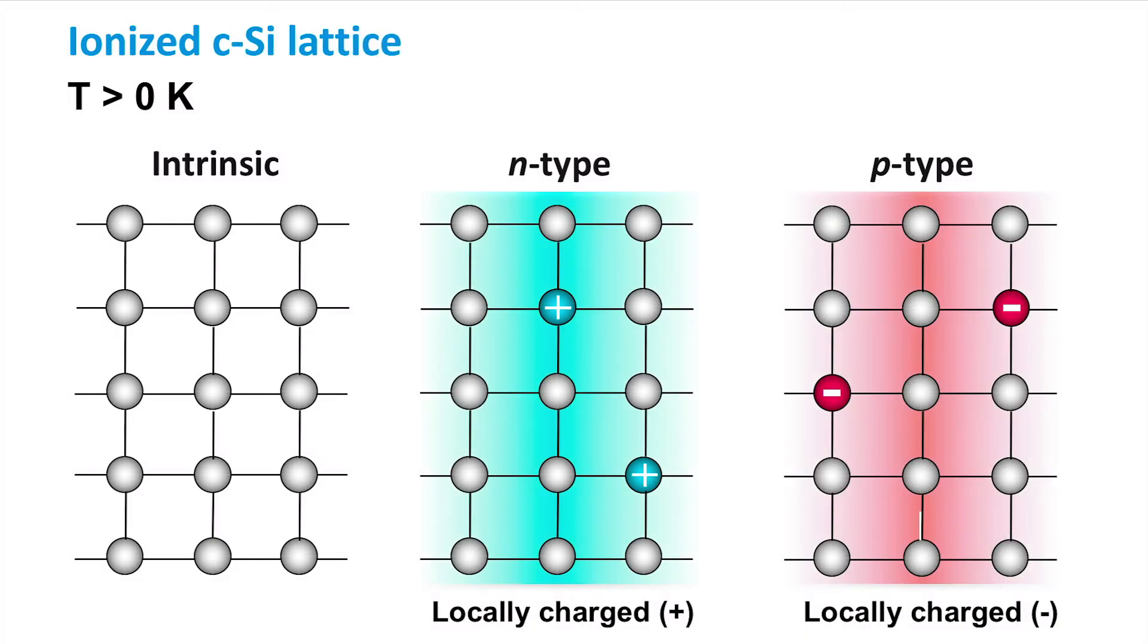Ionization of dopant atoms can affect locally the charge neutrality of the lattice itself. This happens when mobile carriers deplete the region with fixed ionized dopant atoms. As a consequence, the lattice will become locally positively charged in the n-type while in the p-type it will become negatively charged. Nevertheless, the charge neutrality of the whole material is still maintained.